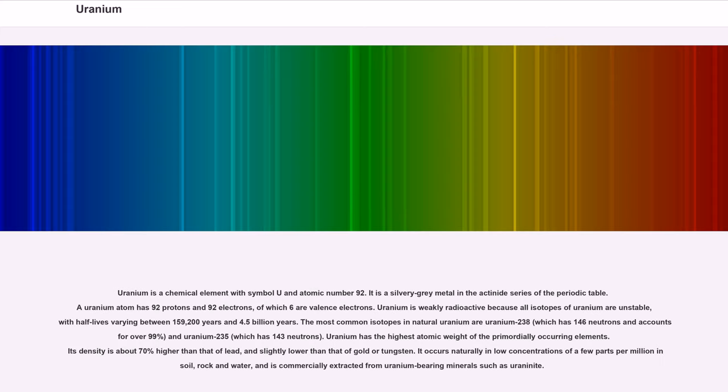Uranium. Uranium is a chemical element with symbol U and atomic number 92. It is a silvery gray metal in the actinide series of the periodic table. A uranium atom has 92 protons and 92 electrons, of which 6 are valence electrons.